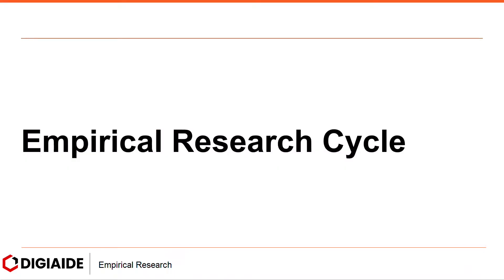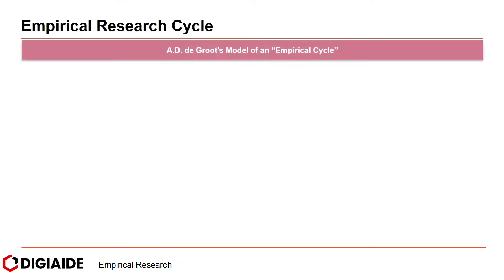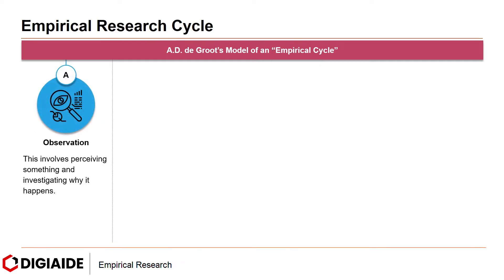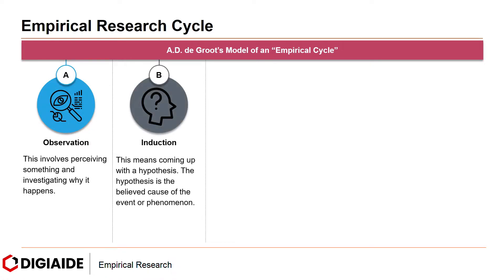Moving on to the empirical research cycle. A.D. Groot's model of empirical cycle entails five stages. First, observation — this involves perceiving something and investigating why it happens. Next, induction — this means coming up with the hypothesis. The hypothesis is the believed cause of the event or phenomenon.